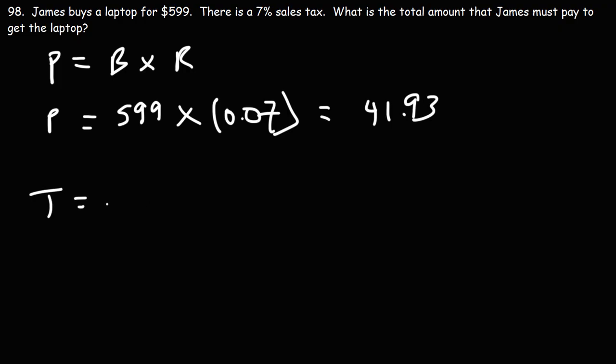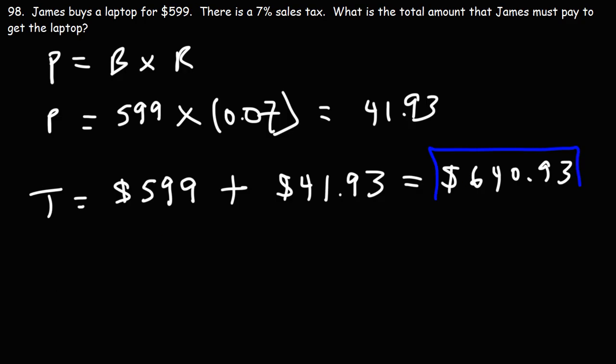So 599 times 0.07, that's going to be 41.93. So now to get the total amount that he has to pay, it's going to be the price of the laptop plus the tax. The 7% tax is $41.93.